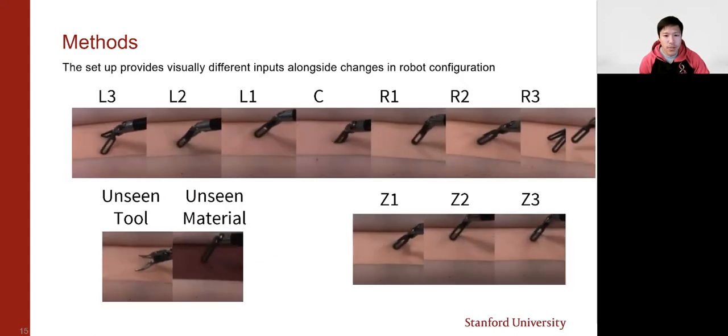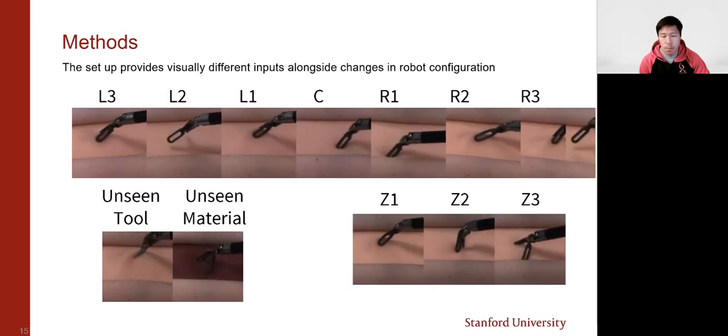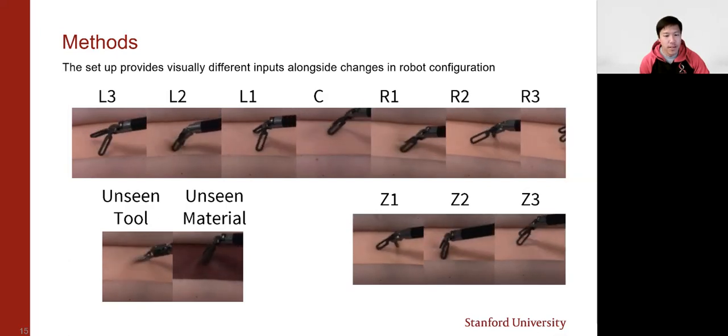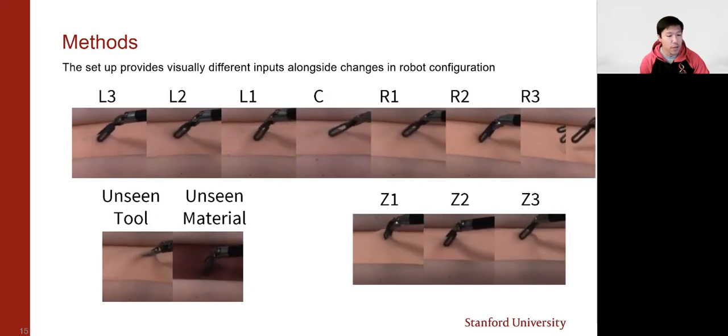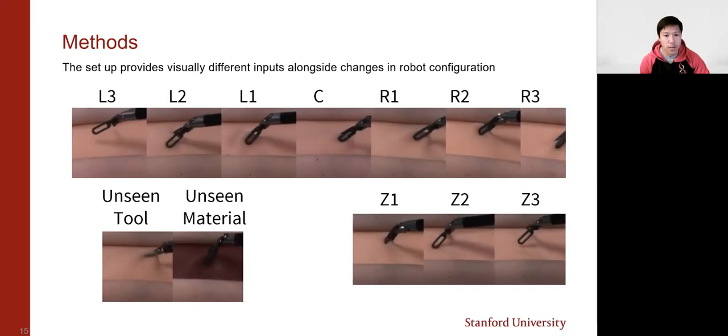Here I present some of the video clips that we managed to capture in our dataset. And from the L3 to the R3 clips here show the lateral configurations of the robot and the camera. And the Z1 and Z3 are the ones where the platform of the tissue was lowered in the vertical direction. And on the bottom left, you see the unseen tool and unseen material.